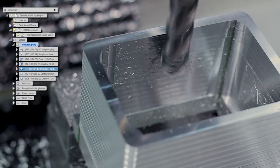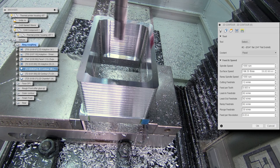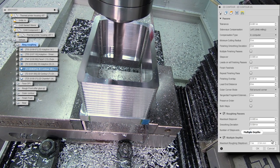After that, we'll do a 2D contour, same tool, same RPM and feed rate, but this time taking one inch step downs as we clean up that inside surface.